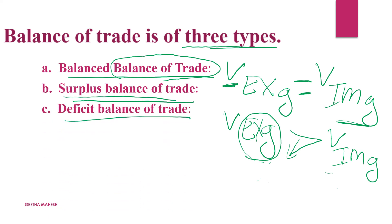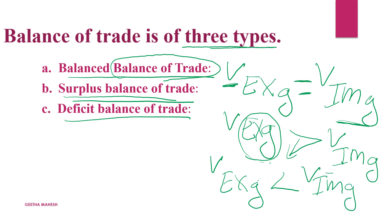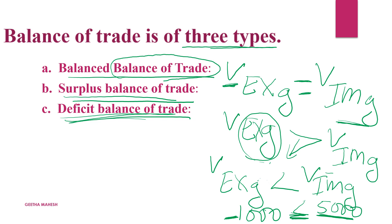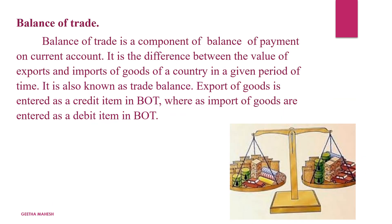Deficit balance of trade is when the value of export of goods is less than the value of import of goods. For example, import of goods value is 5,000 and export of goods value is only 1,000. This results in a deficit balance of trade.